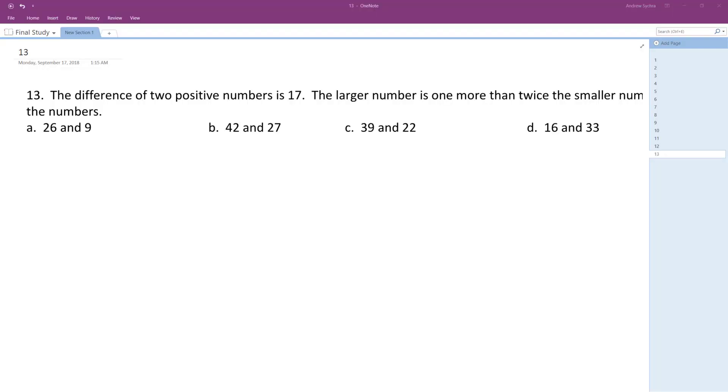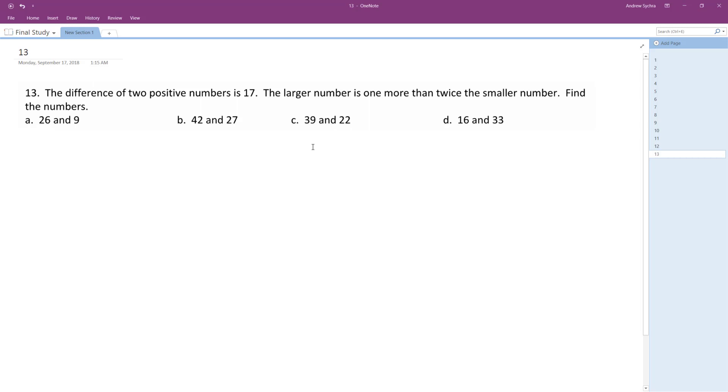All right, so the difference between two positive numbers is 17, and the larger number is one more than twice the smaller number. Okay, there we go. So find the numbers.